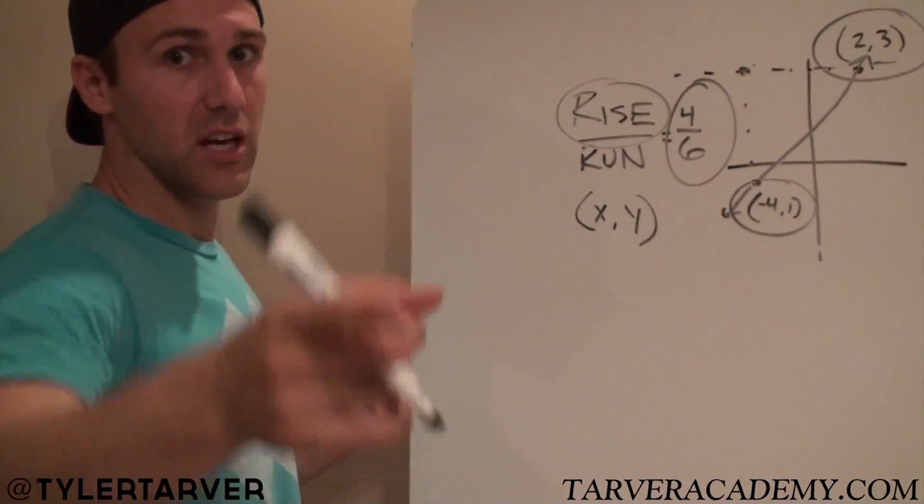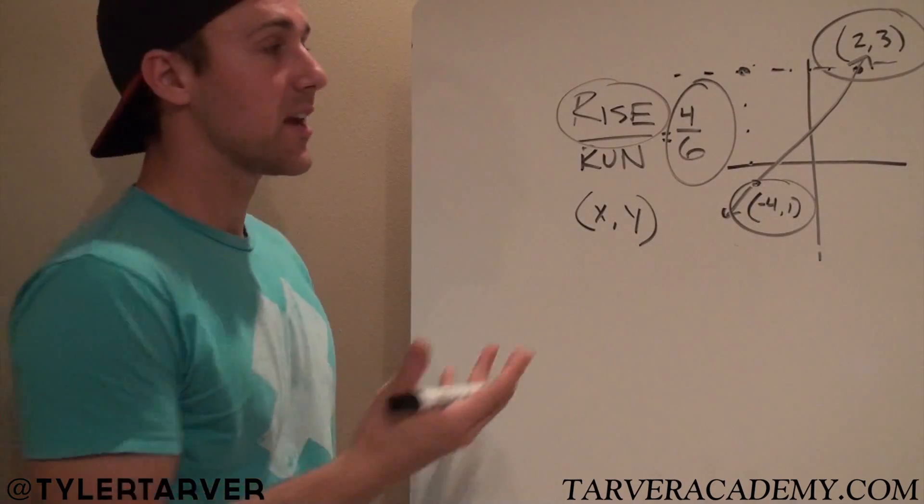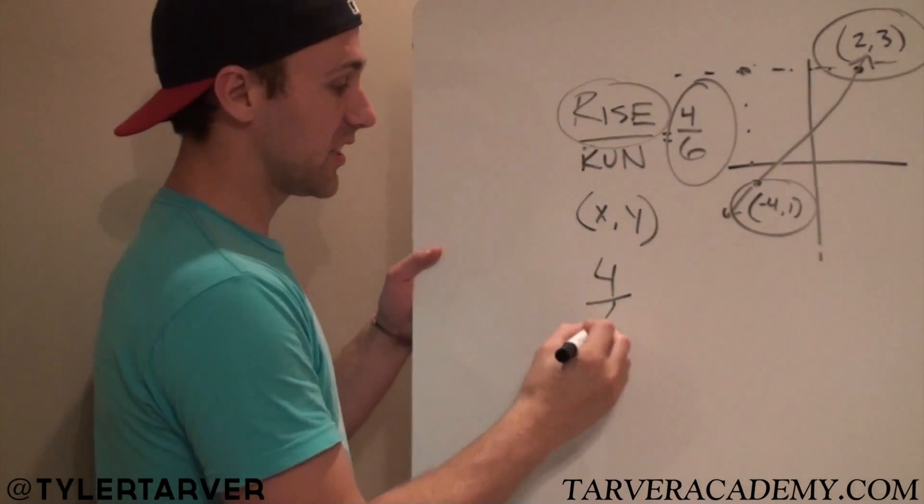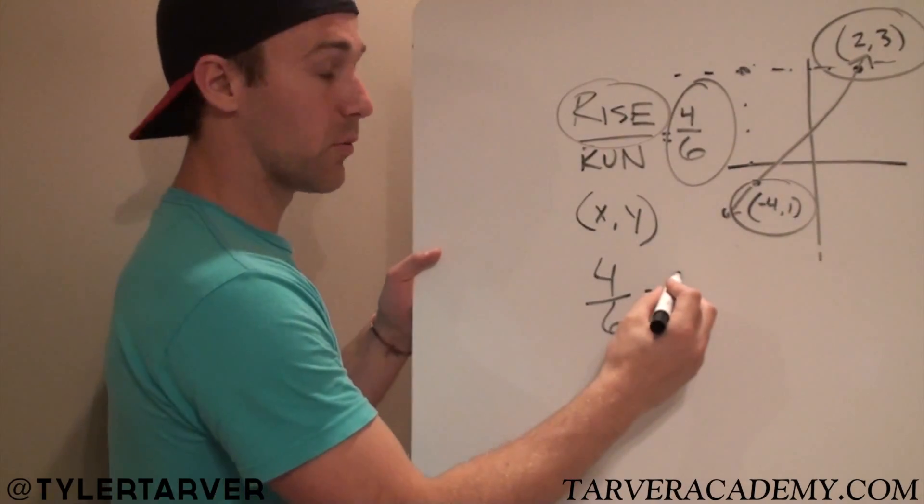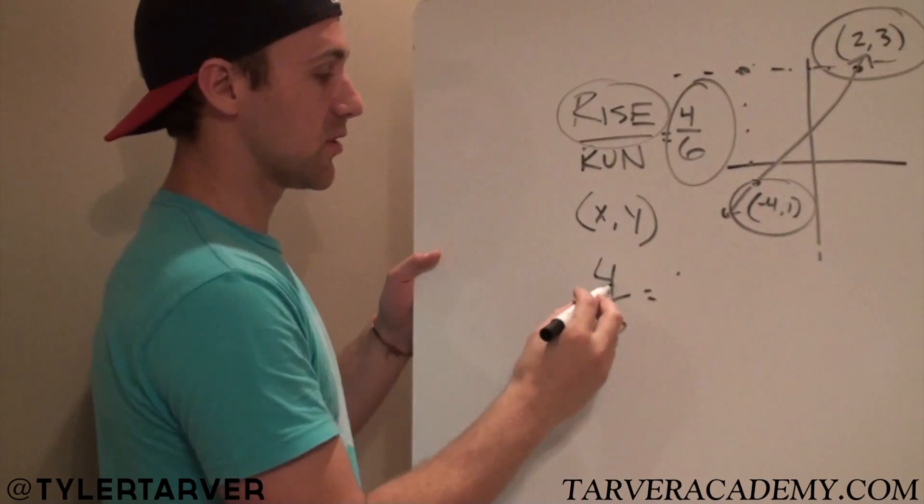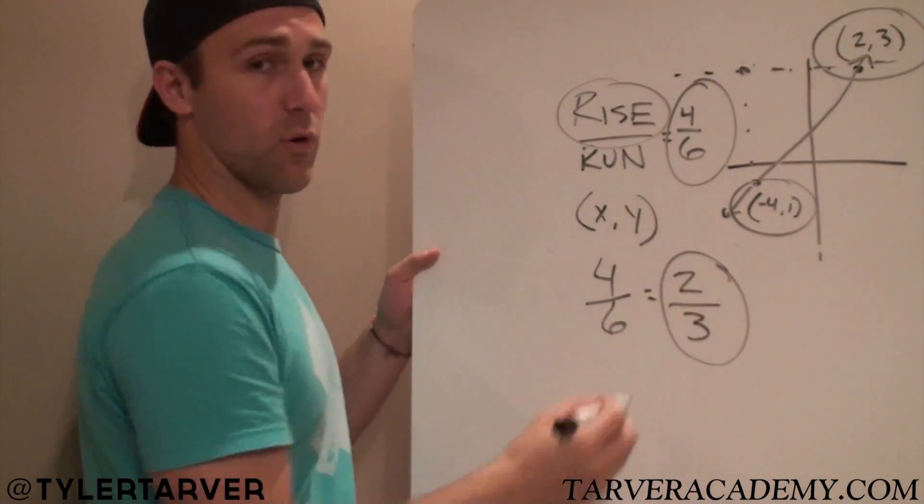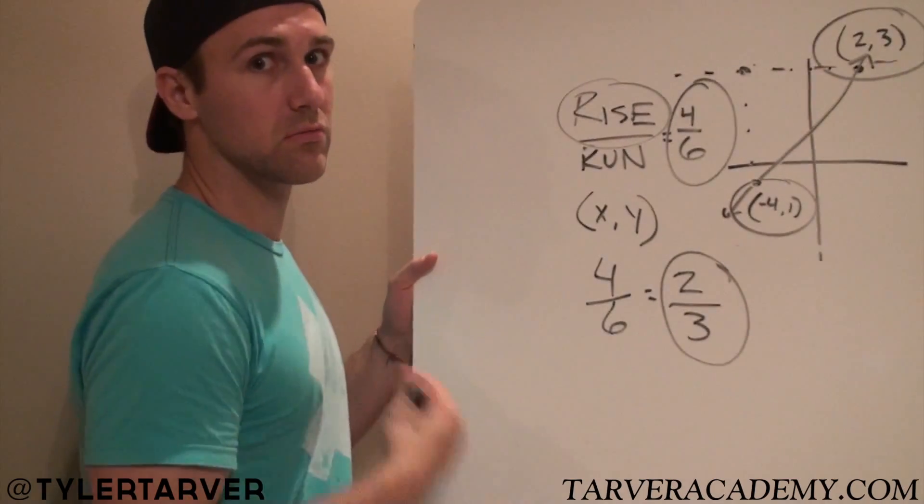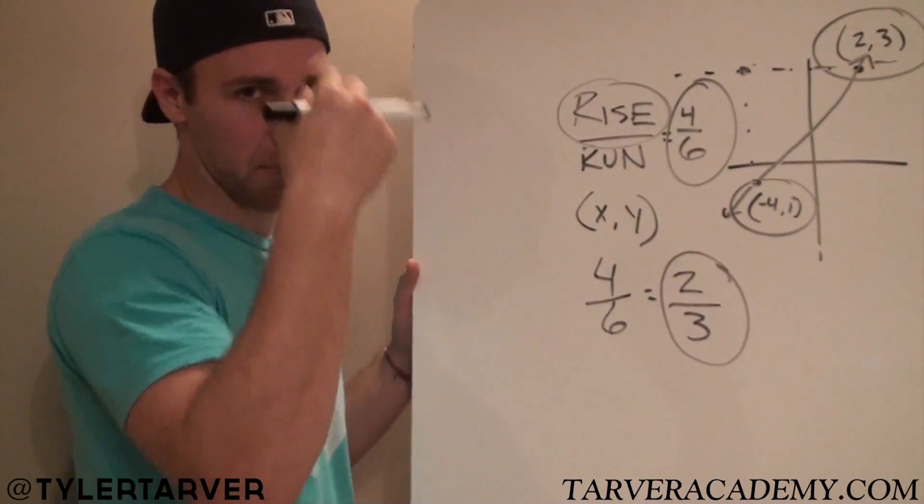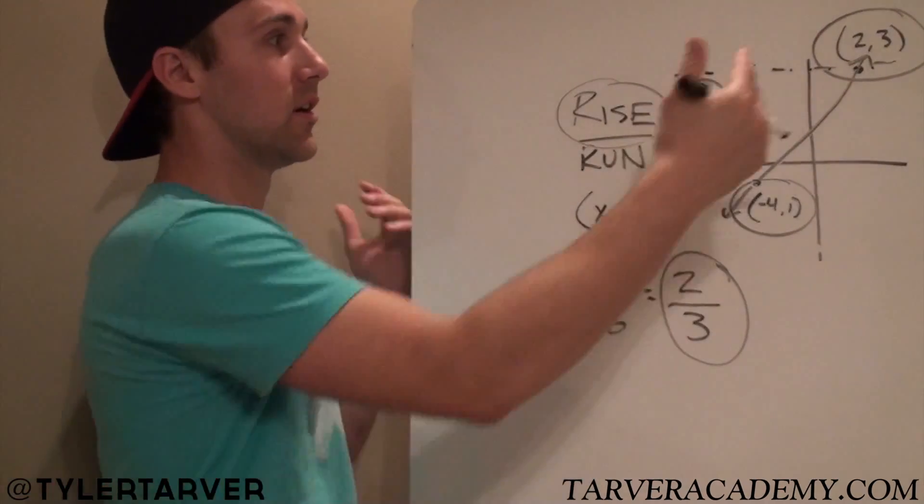Now that would be our answer if we wanted to stop there, but what do we always know? Whenever we've got a fraction and that little guy can be reduced, we've got to reduce it. So you've got 4 over 6. Let's reduce it to what goes into both of those? 2 does. So 2 goes into 4 twice, 2 goes into 6 three times. Can we reduce that anymore? No sir, not in my house. That's Under Armour, right? Sorry if that's copyrighted. So 2 over 3 is the slope of that line.